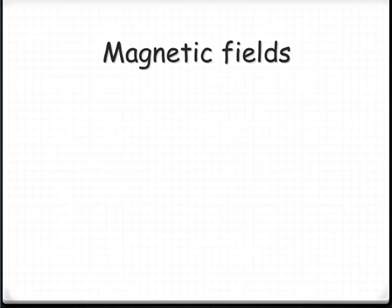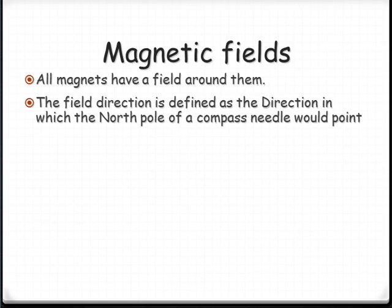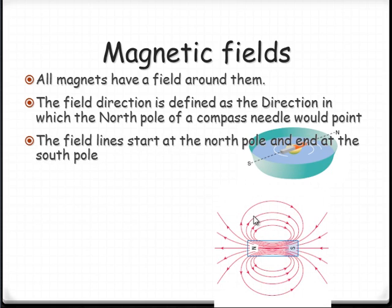All magnets have that field around them. The direction is defined as the direction that the north pole of a compass would point if it was placed in there. So the direction that you put the arrow on a line is where the north pole would face, which would be attracted to a south pole. The field lines start at the north pole, and then they point towards the south pole. As a result, they always end at the south and start at the north.